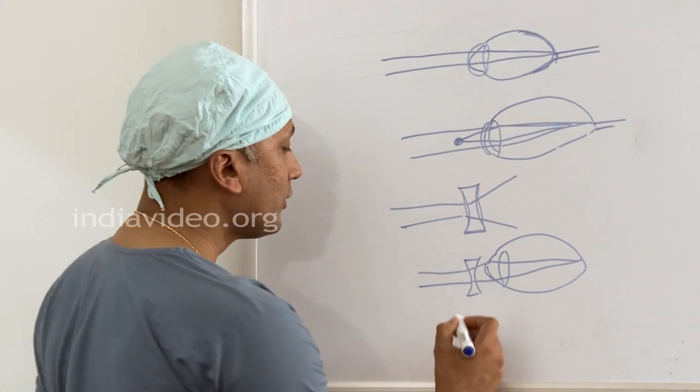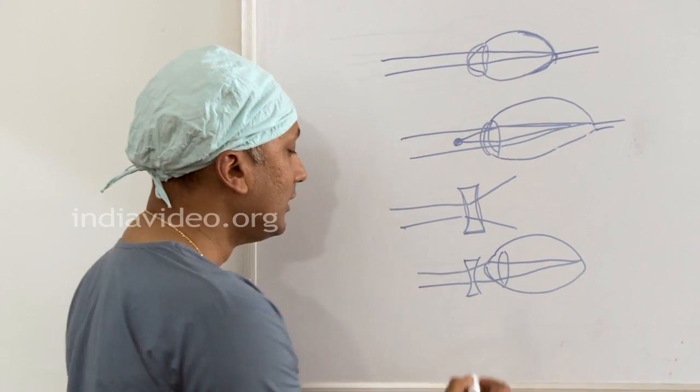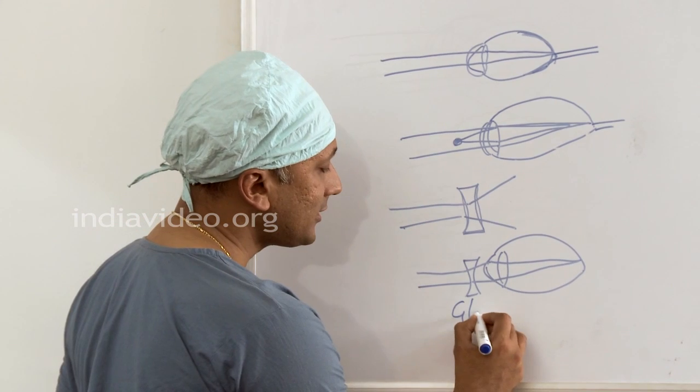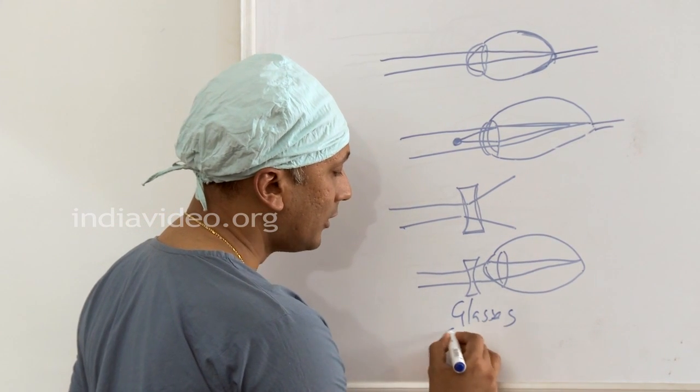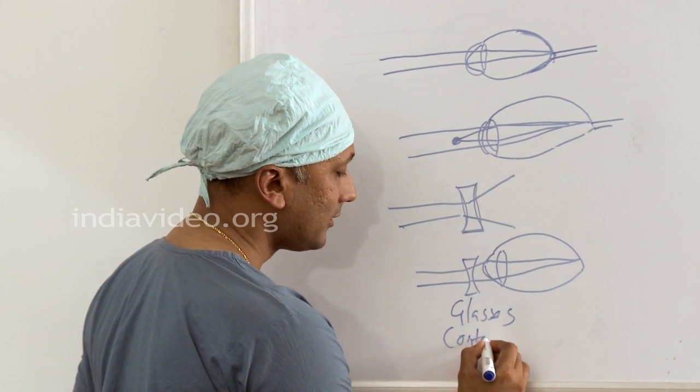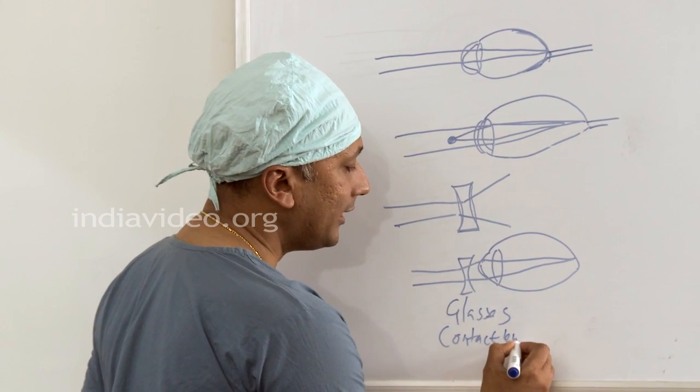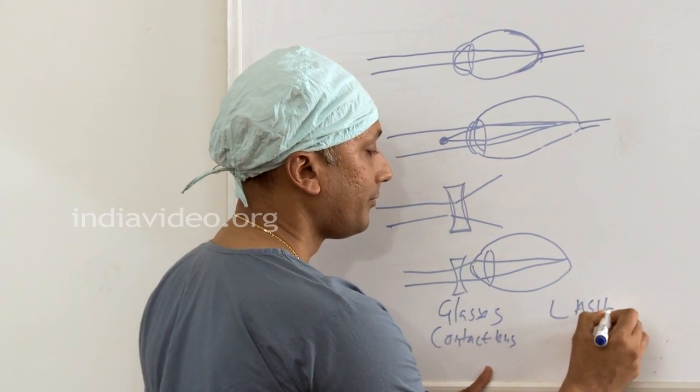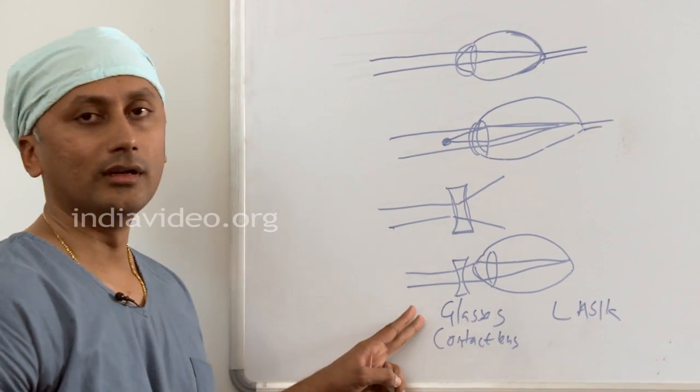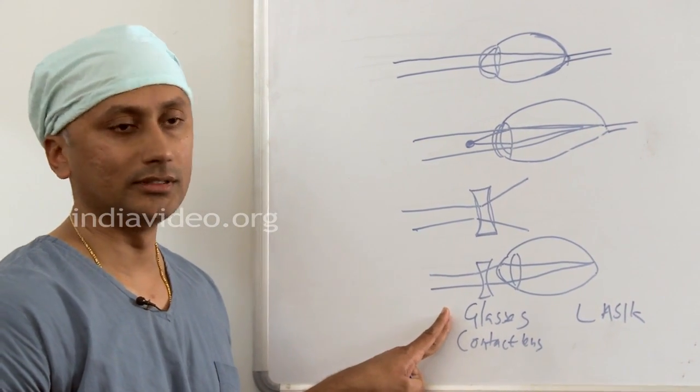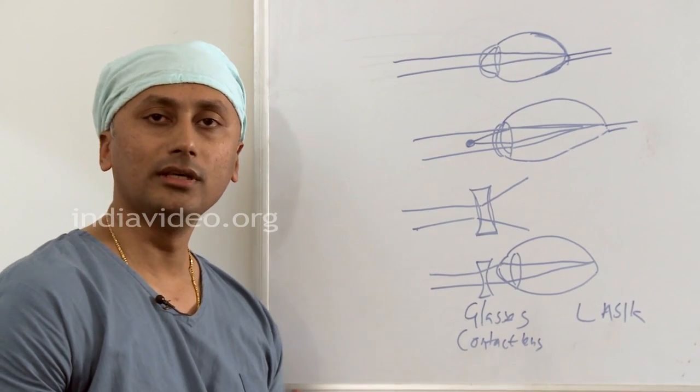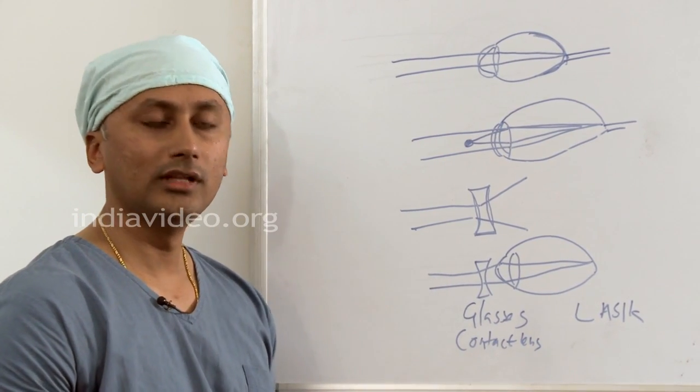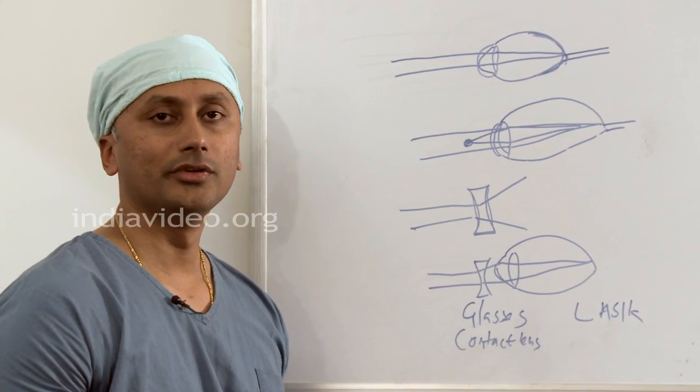A divergent lens is also called a minus lens. This can be in the form of glasses, contact lenses, and the latest is LASIK. In our opinion, glasses are the best option for any patient because they help them to see very well, there is no contact with the eye, and there is a protective mechanism for the eye.